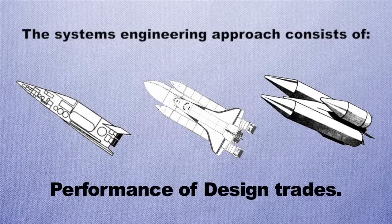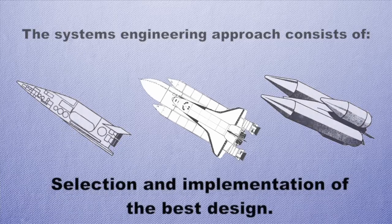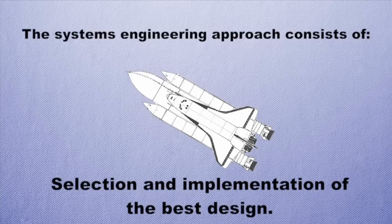You then go through a number of trade studies — design trades — where you look at which one of these potential systems might be best at meeting that goal, and what's the optimal way to achieve it. The system engineering approach consists of selecting and implementing that best design. Best can be both subjective and objective: in the case of the early shuttle design work shown here, best might mean it can carry the most payload to space, or it might mean it's the safest approach. There are subjective and objective ways to consider what the best solution is.